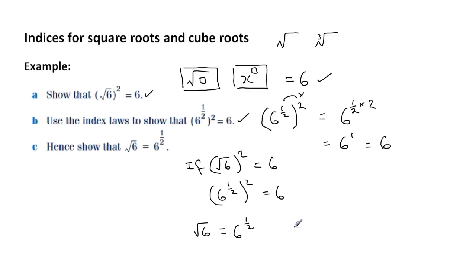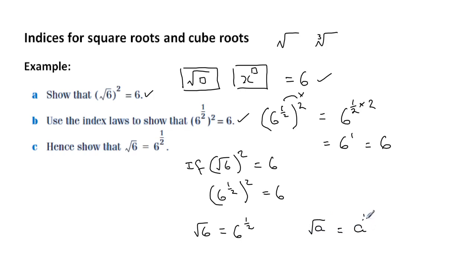And in fact, that's the rule or the symbols we need to learn: when we have a square root and want to change it to index form, if we have any number with a square root sign, it's exactly the same as writing that number as the base to the power of a half.